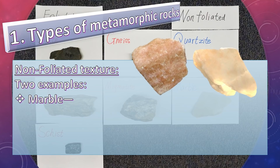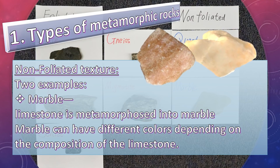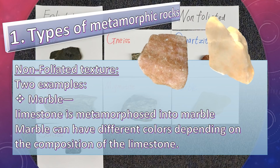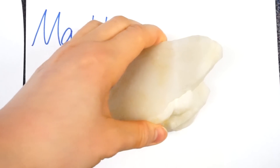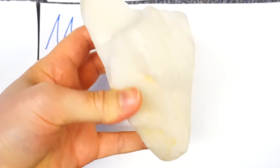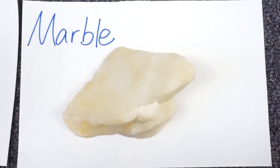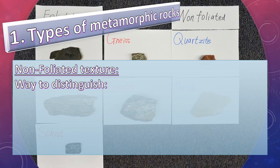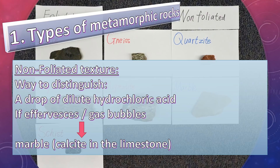Second, marble. Limestone is metamorphosed into marble. Marble can have different colors depending on the composition of the limestone. This is a sample of marble.